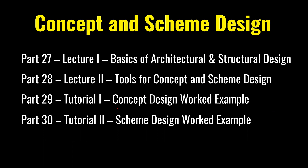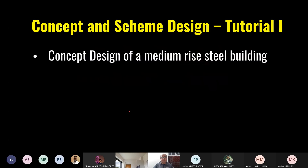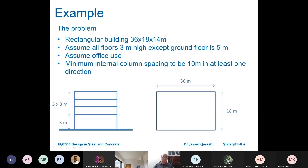This is a concept design example. The building is a rectangular building, 36 by 18 by 14 meters. The horizontal dimension is 36m, width is 18m, and the building is 14 meters high — three upper stories at 3 meters each and a ground floor at 5 meters. Assuming office use, the minimum internal column spacing is to be 10 meters at least in one direction. We now have to design this building from scratch.